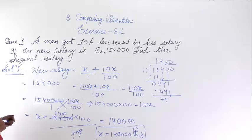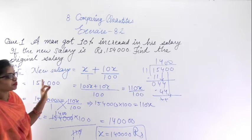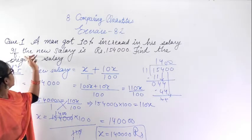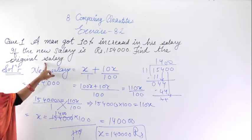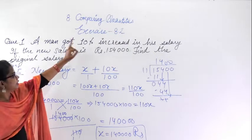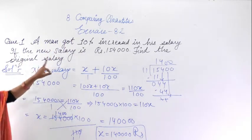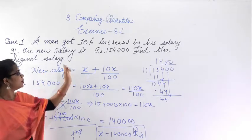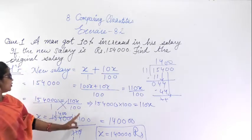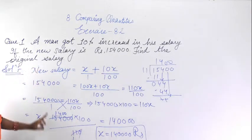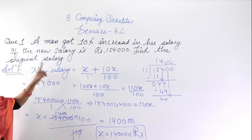So in this question, a man got a 10% increase in salary. We let the original salary be X. The new salary was given as 1,54,000. We found the increased amount as 10X upon 100. New salary equals X plus 10X upon 100, and solving this gave us X equal to 14,000 rupees — that is the original salary.